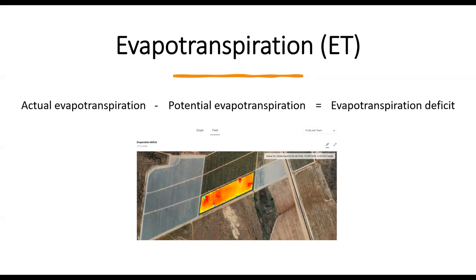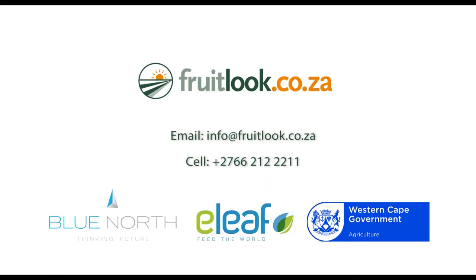We will tell you more on how to use FruitLook's evapotranspiration data for irrigation management in the next video. But when applying irrigation, take into account possible losses depending on your soil and irrigation method. Also remember to look at the weather forecast — for example, if rain is predicted, you won't need to irrigate. Please do contact us if you have any questions on the ETLook algorithm or any other aspect of FruitLook.